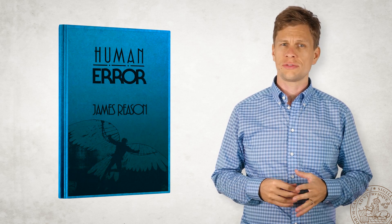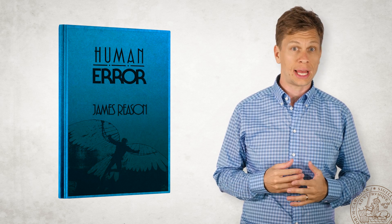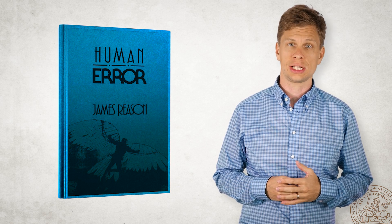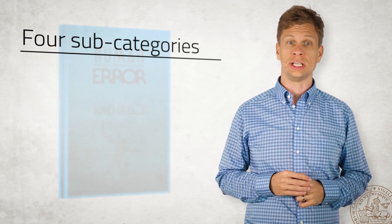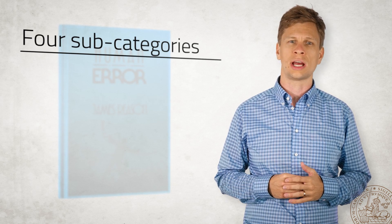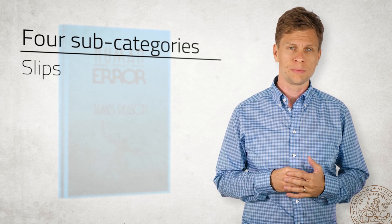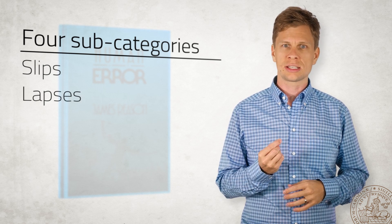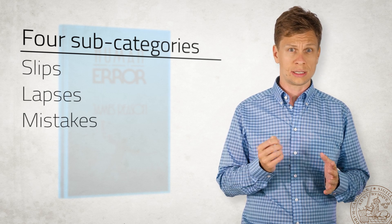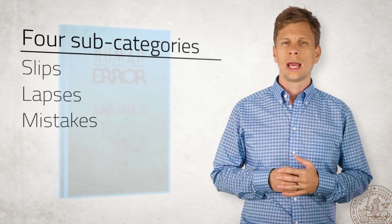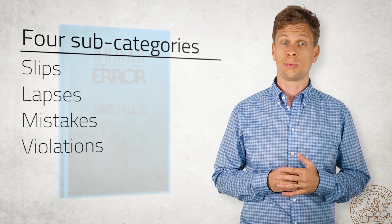Reason's Cognitive Psychological School sees error as a social fact of life, and in his book Human Error, published in 1990, he defined four subcategories, or types, of errors or unsafe acts. They are slips, which are failures of attention; lapses, which are failures of memory; mistakes, that according to Reason can be rule-based or knowledge-based; and finally violation of rule or procedure.